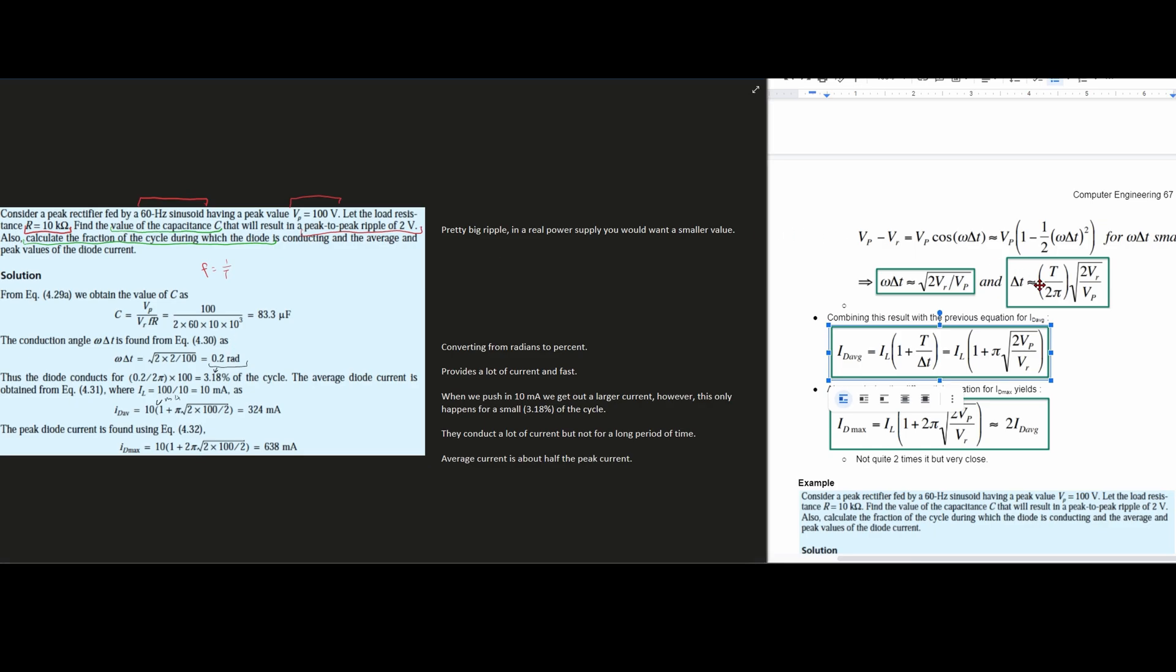We're going to do the same thing for our I_d_max. We're doing this because we also want to calculate the fraction of the cycle during which the diode is conducting and the average and peak values of our diode current. Our I_d_max is equal to basically the same formula, our I_L, which is Vp divided by resistance, giving us 10 milliamps. Then we have basically the same thing inside but with Vp over Vr. In this one we have 2, because this is essentially 2 times our I_d_average for small values. That's going to give us 638 milliamps.